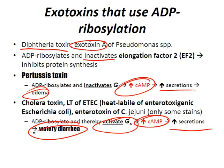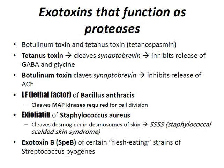Let's talk about exotoxins that function as proteases. Botulism toxin and tetanus toxin, also known as tetanospasmin, both cleave the releasing protein synaptobrevin, thereby inhibiting neurotransmitter release. However, although they share a similar mechanism, these toxins affect the release of different neurotransmitters. The tetanus toxin cleaves synaptobrevin, which inhibits the release of GABA and glycine.